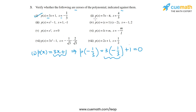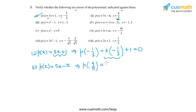Now let's go to the second part. The polynomial is p(x) = 5x - π, and we have to calculate p(4/5). This equals 5 × (4/5) - π. The 5s cancel, leaving 4 - π, which is non-zero. So 4/5 is not a zero of this polynomial.